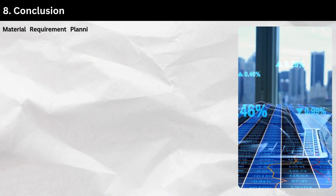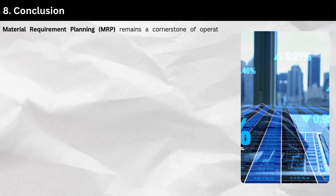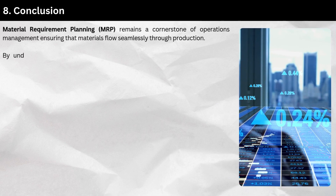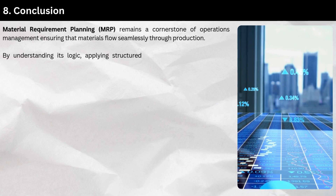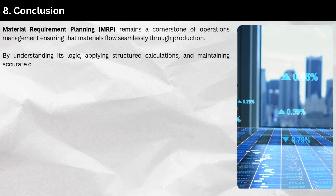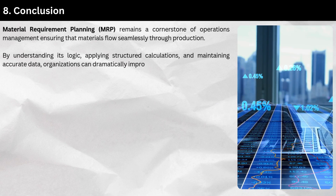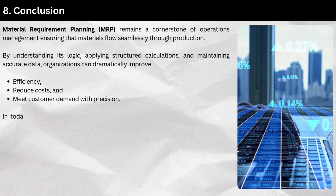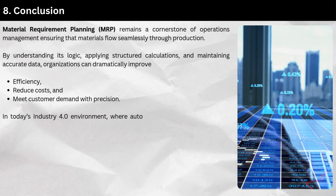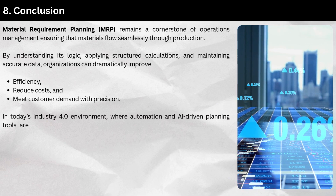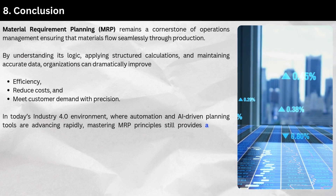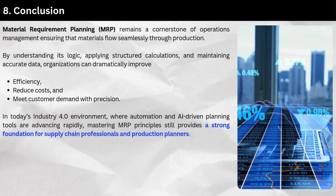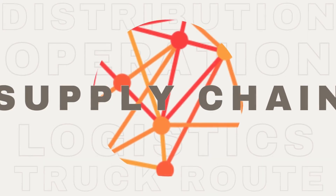Conclusion: Material Requirement Planning (MRP) remains a cornerstone of operations management, ensuring that materials flow seamlessly through production. By understanding its logic, applying structured calculations, and maintaining accurate data, organizations can dramatically improve efficiency, reduce costs, and meet customer demand with precision. In today's Industry 4.0 environment, where automation and AI-driven planning tools are advancing rapidly, mastering MRP principles still provides a strong foundation for supply chain professionals and production planners.